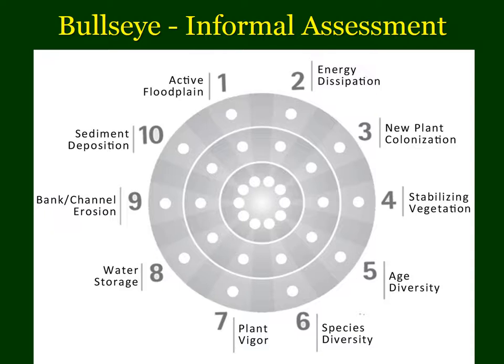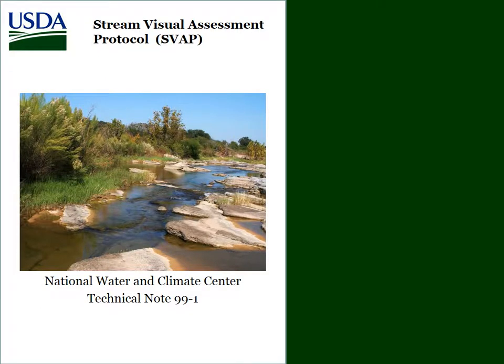There's a little bit more formal assessment called the Stream Visual Assessment Protocol, called SVAP. There's actually a revision now called SVAP-2. This is an assessment method used by the Natural Resources Conservation Service in some states to work with landowners on stream health.